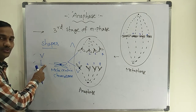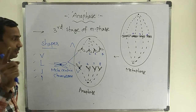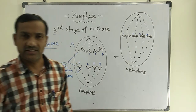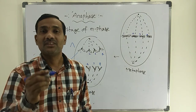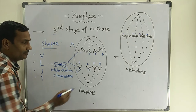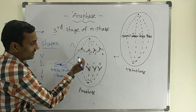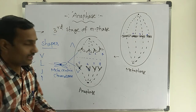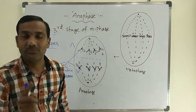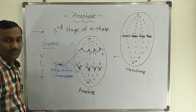During anaphase, chromosomes appear in different shapes: a metacentric chromosome appears V-shaped, sub-metacentric appears L-shaped, acrocentric appears J-shaped, and telocentric chromosome appears I-shaped. All chromosomes start to migrate to opposite poles. The centromere faces toward the pole while the arms face toward the center of the cell.